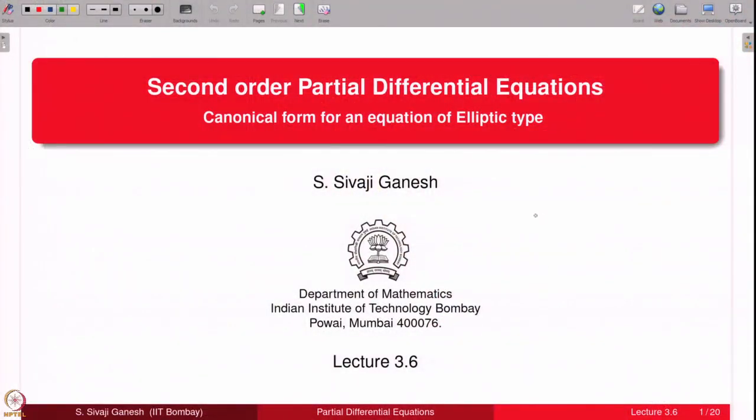Recall we have seen this example of an elliptic equation, namely the Laplace equation. The canonical form for an elliptic equation we would like to resemble this. If you observe here in this equation, u_xy does not appear and u_xx and u_yy appear with coefficients 1. This is going to be the model for us for an equation of elliptic type.